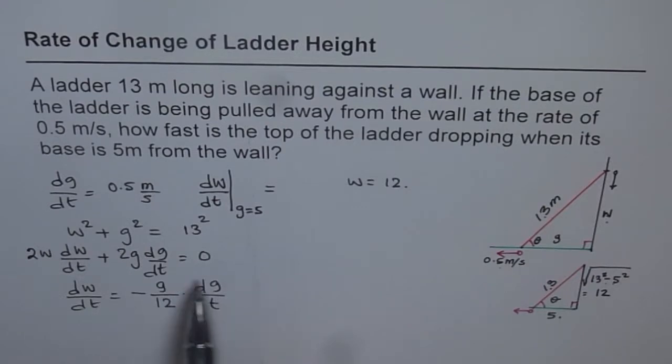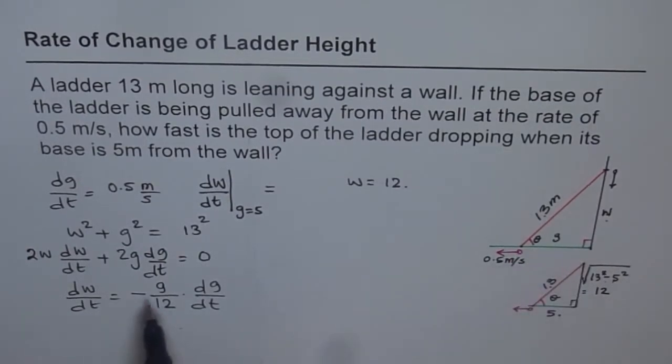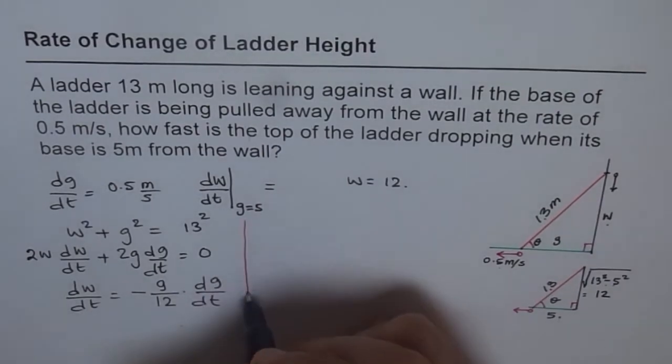Now, in this expression, we need to find dW/dt at the instance when the distance is 5, that is when G is 5. So let us solve for that.